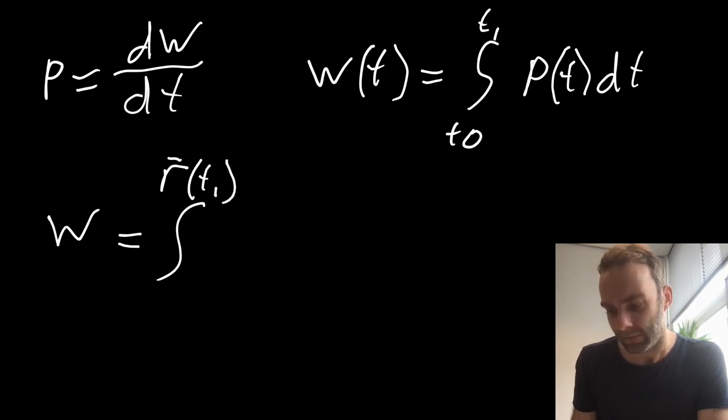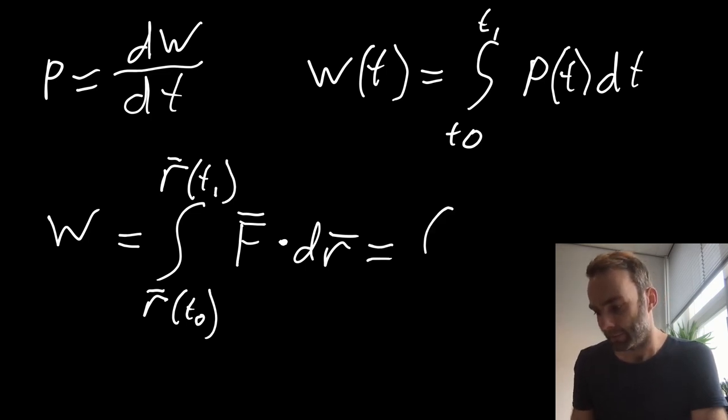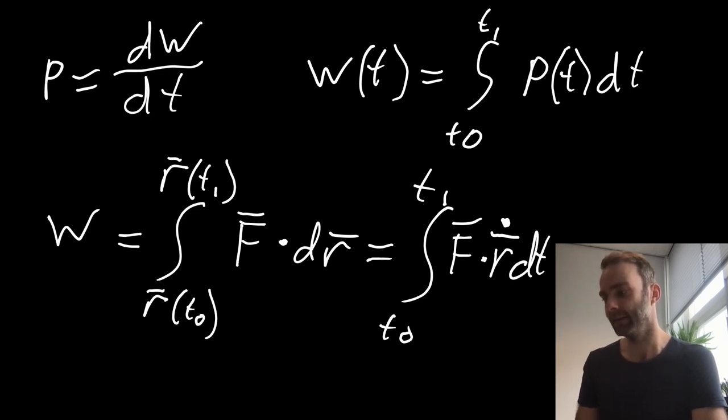So here you have a position vector from T0 to T1. You take the integral of a force F with a position. And this is equal to, if you do it over time, the rate of change of position, which is velocity. And you get that expression.